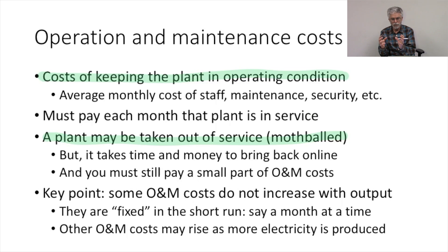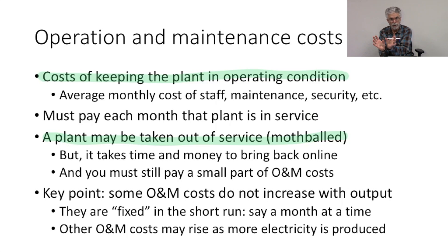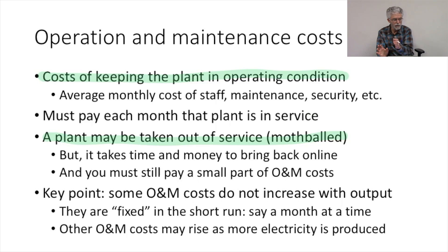We're going to take the portion of operation and maintenance costs that apply only when the plant is running and divide those further. Once you have a plant running, there are some costs you have to pay no matter how much the plant is running. Once you turn it on, you have to have a fully staffed control room, security guards at the gate, and all the people and resources required to get the plant running — but some of these costs won't change depending on how much you run the plant.